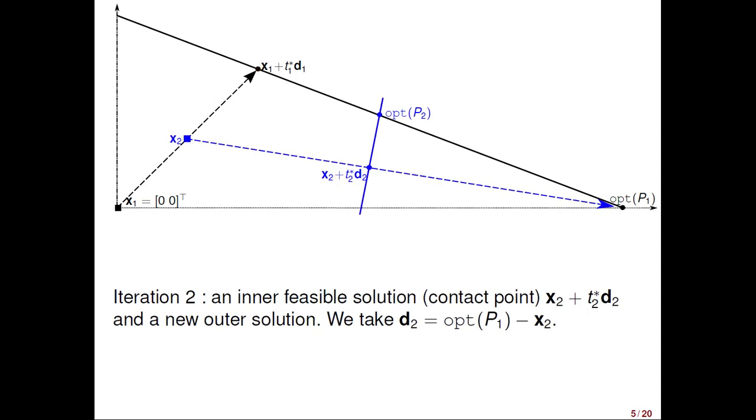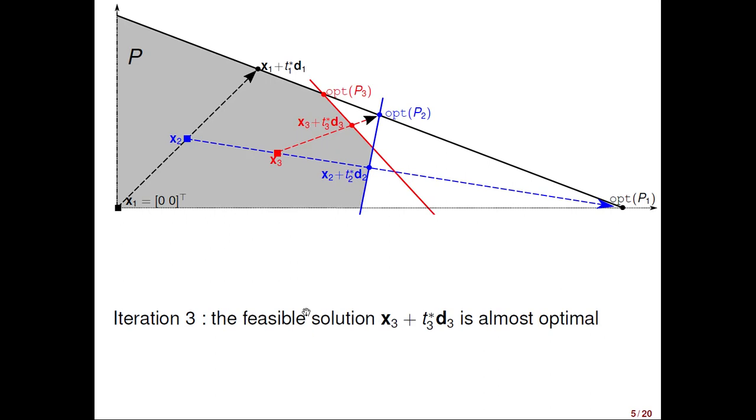We project x2 towards opt P1 and this will give a new contact point and also a new outer approximation of the initial polytope P. And opt P2 is the upper blue circle. The last contact point is the lower blue circle. You notice already the distance between them is much smaller than the distance between x2 and opt P1. And then the third iteration can go like that. We take a new inner solution, the small red square.